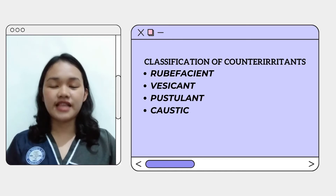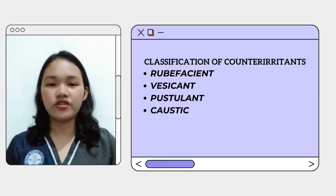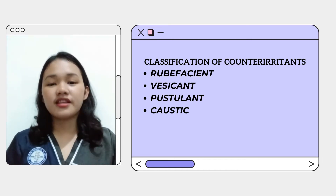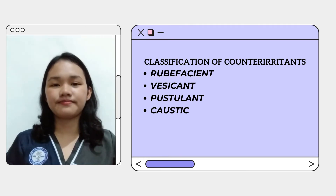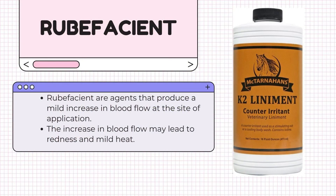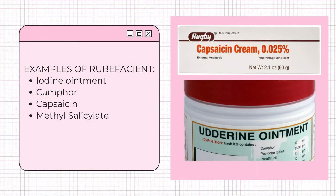Counter-irritants are classified based on the intensity of irritation. The classifications are rubifacient, vesicant, pustulant, and caustic. Rubifacients are agents that produce a mild irritation. This increases the blood flow at the site of application, which can cause redness and mild heat. Examples of rubifacients are iodine ointment, camphor, capsaicin, and methyl salicylate.